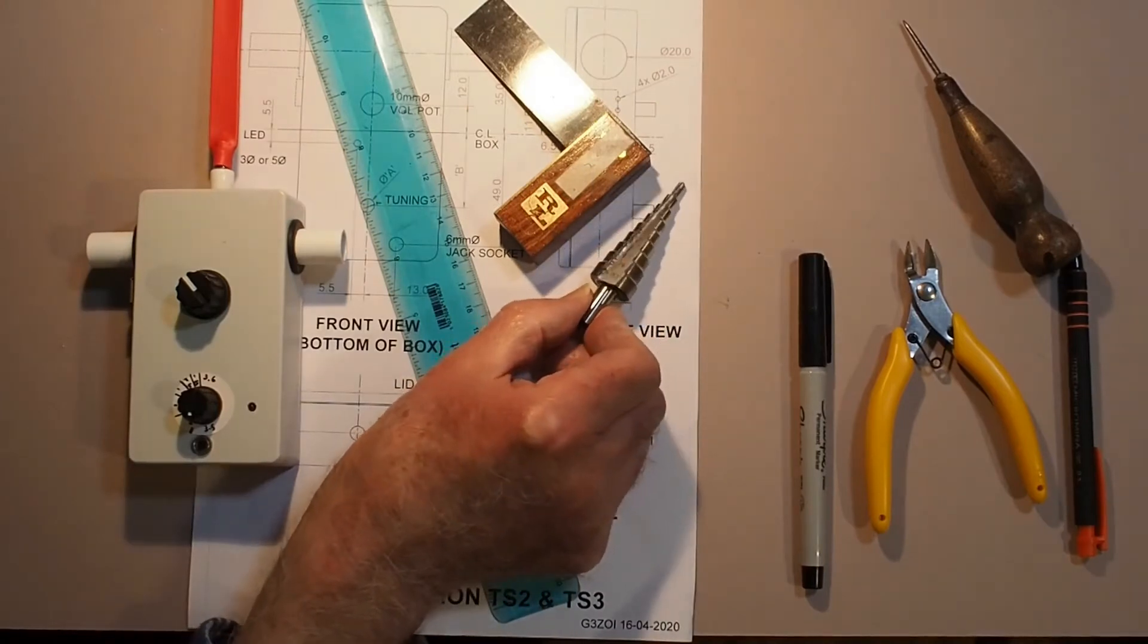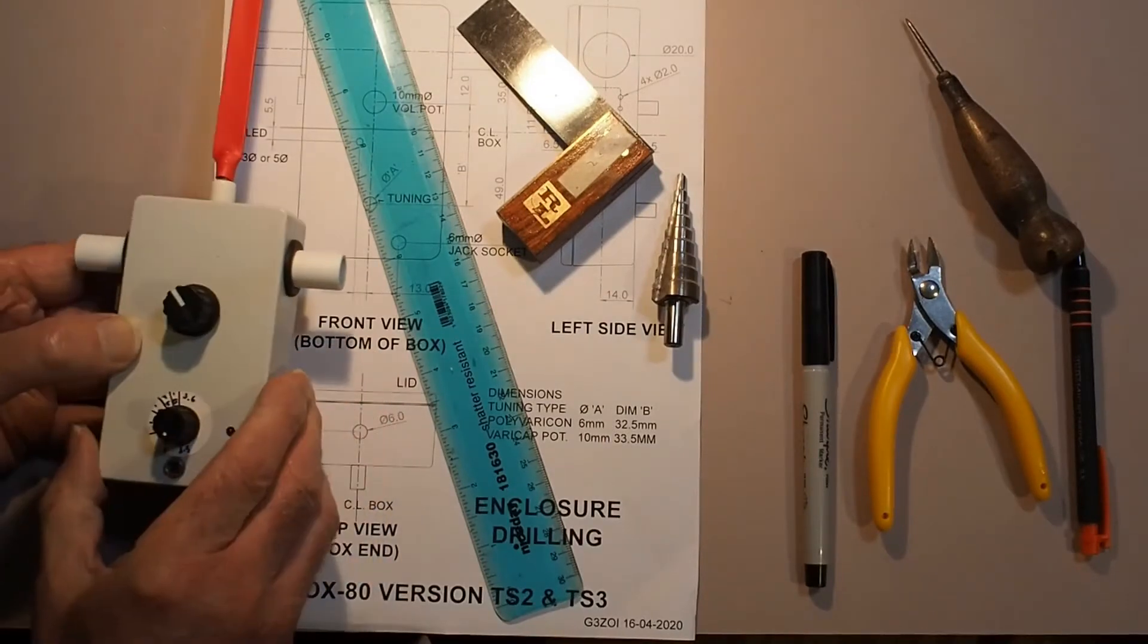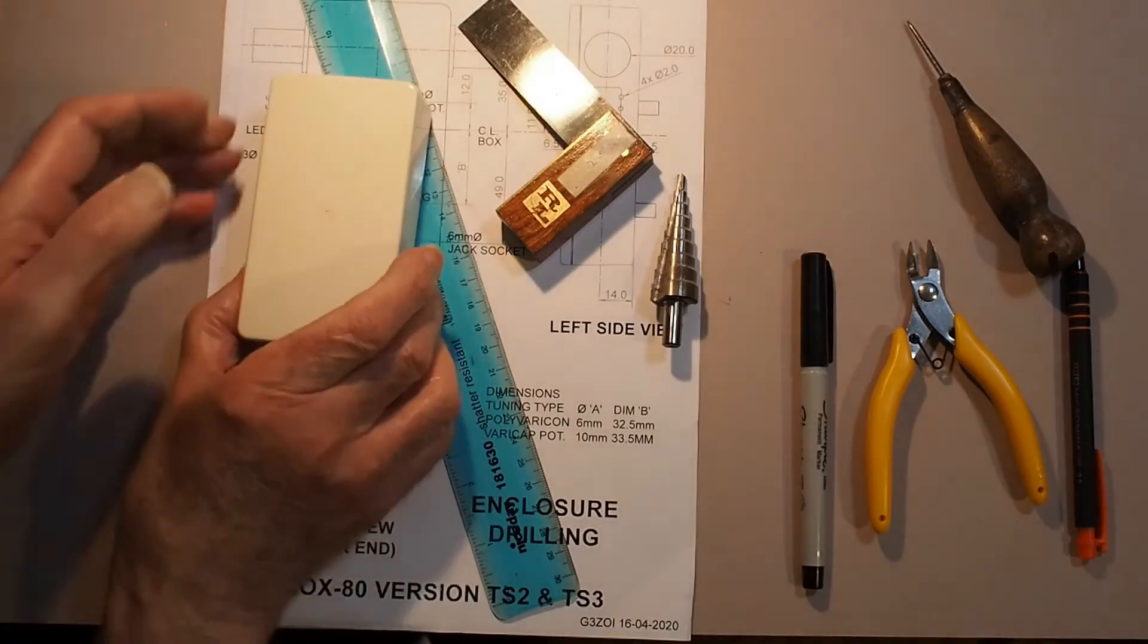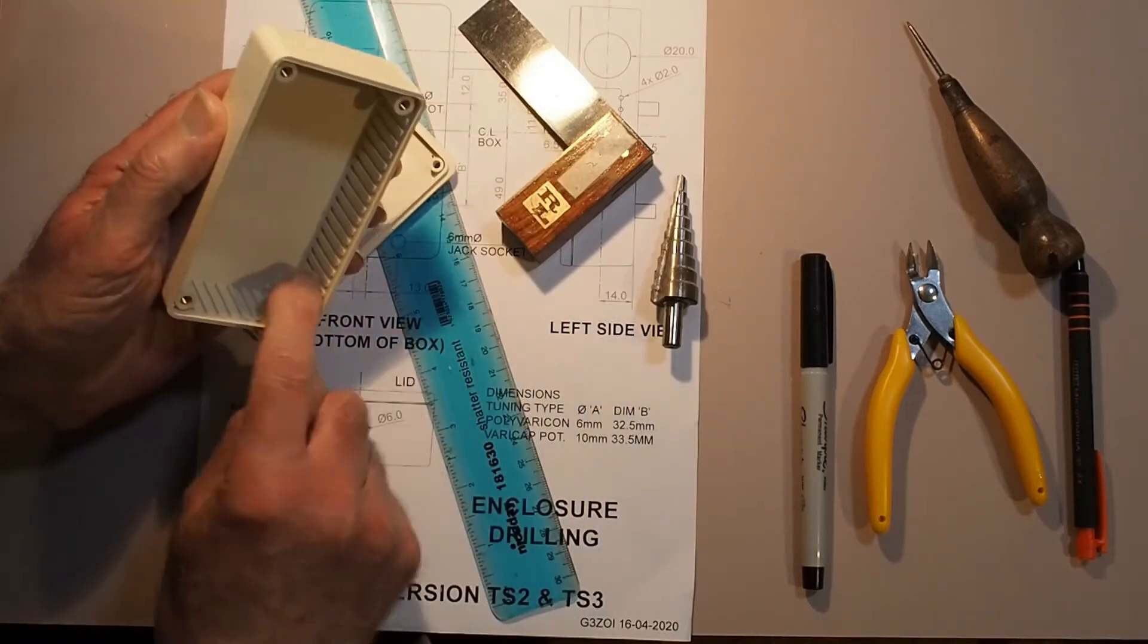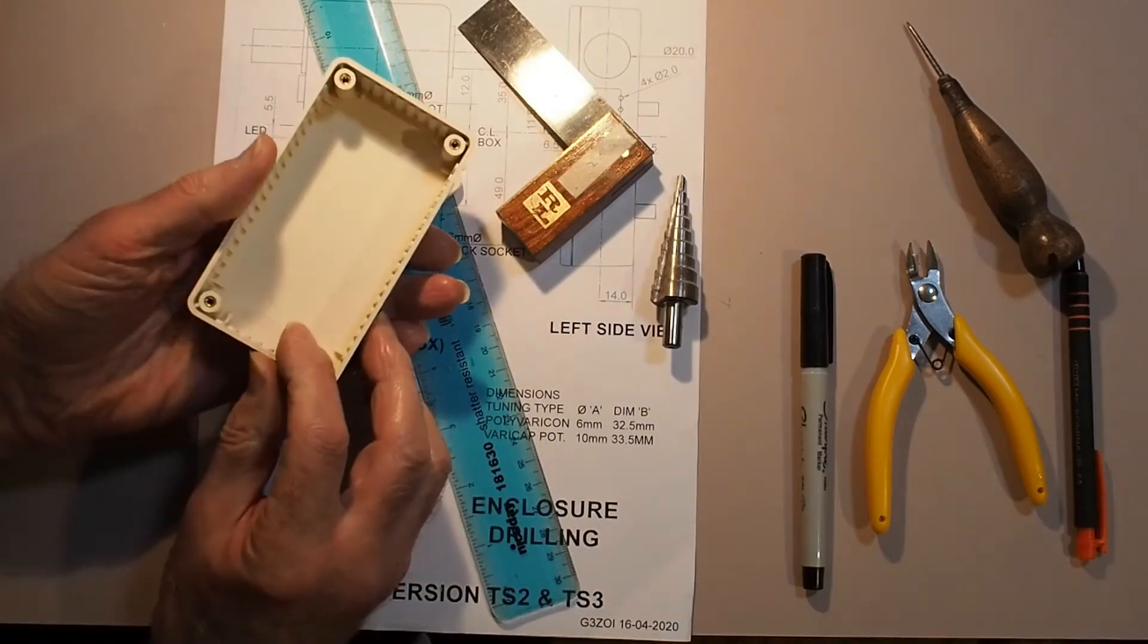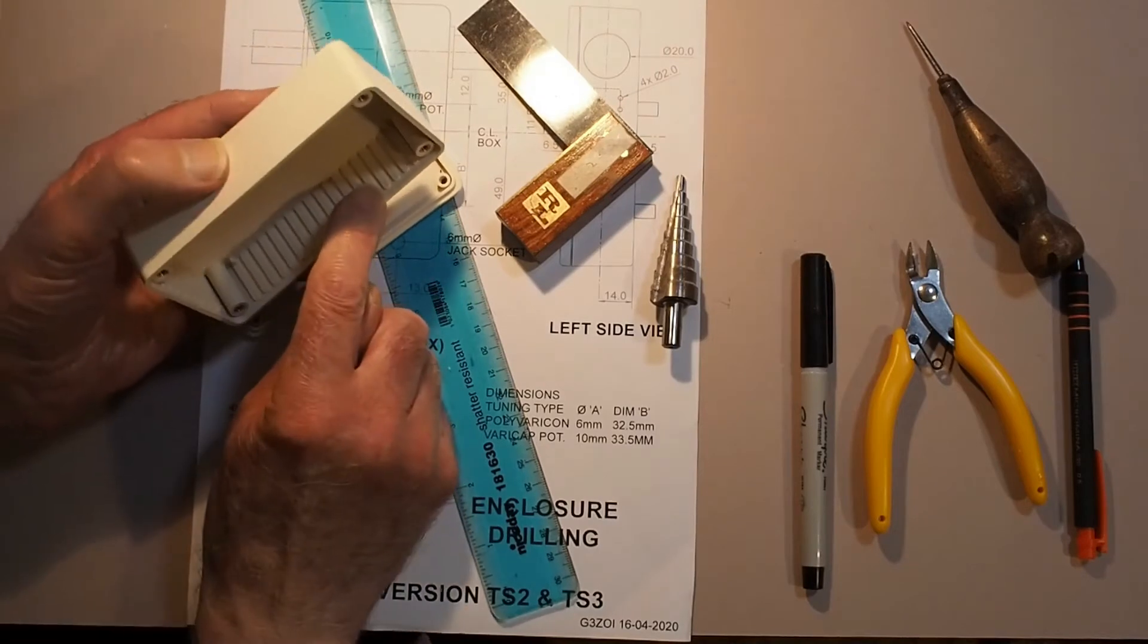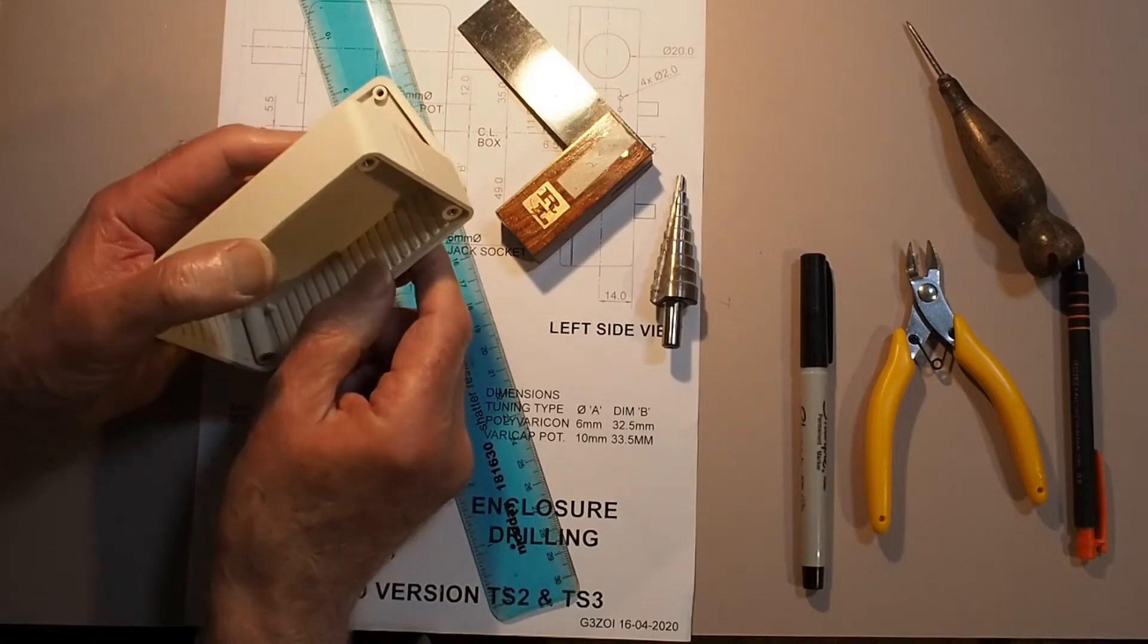We use a standard Hammond ABS box. It's a very common size, so you might have one already in your own shack. This one here has got ridges inside to take PCBs. If you're going to use one like this, you'll have to remove some of these ridges in the area of the ferrite rod assembly.